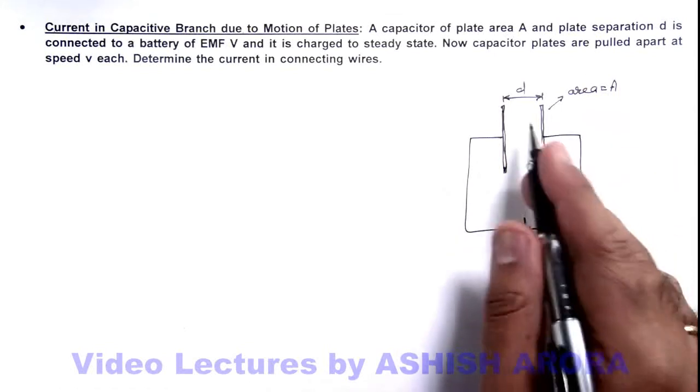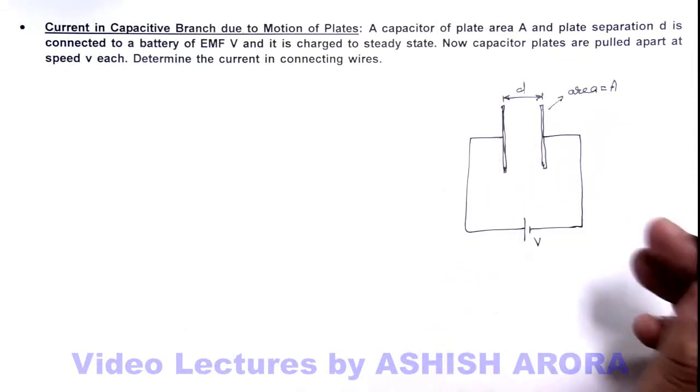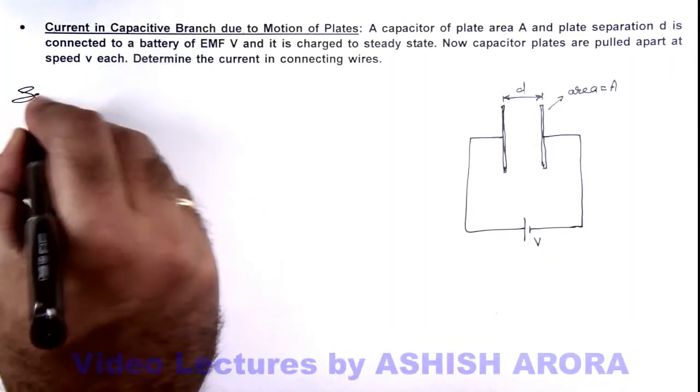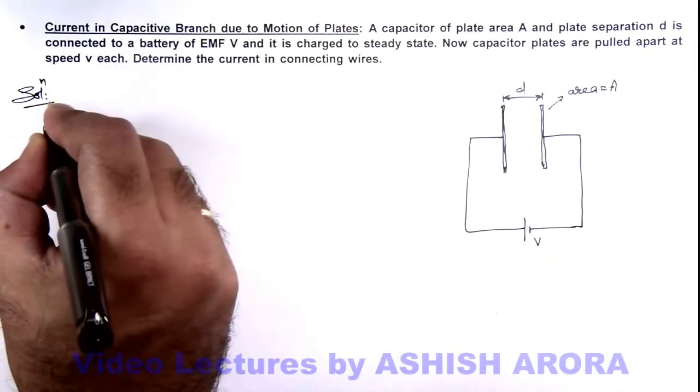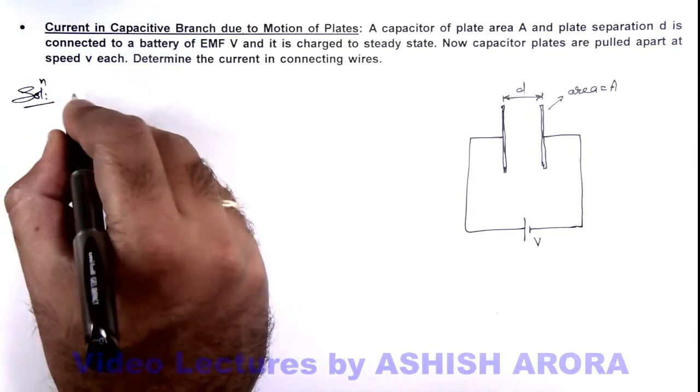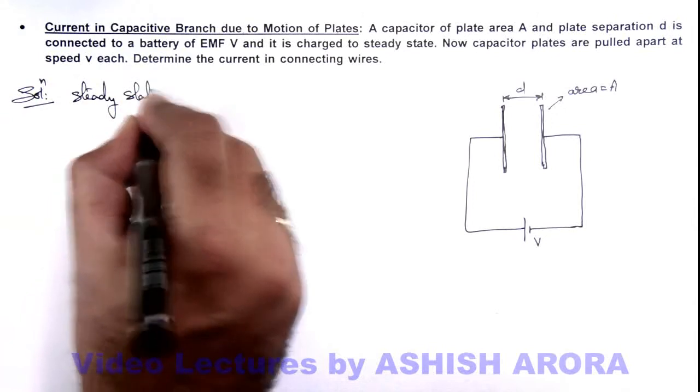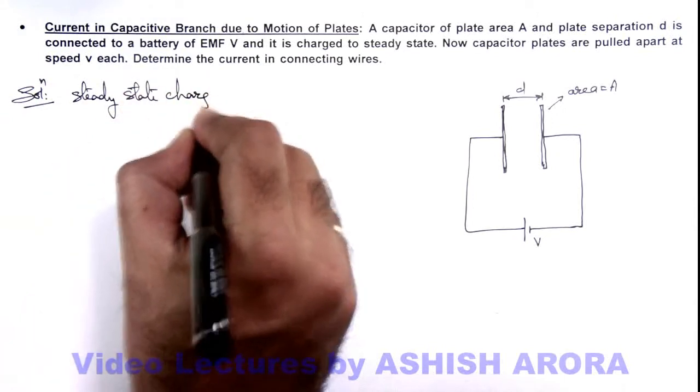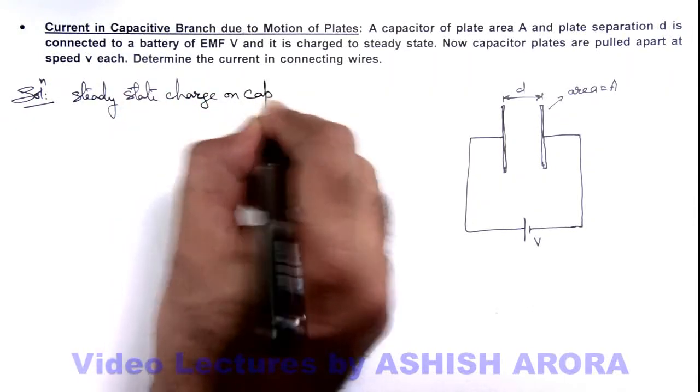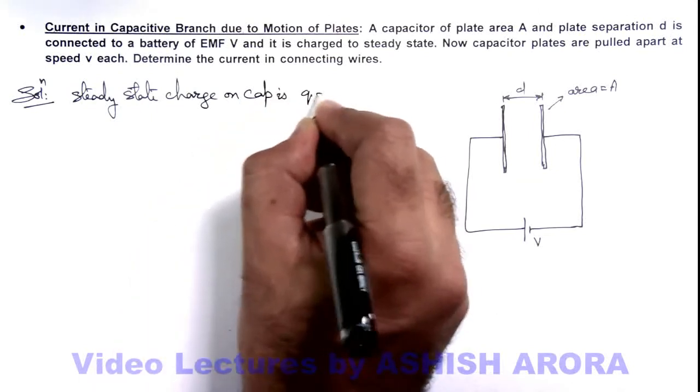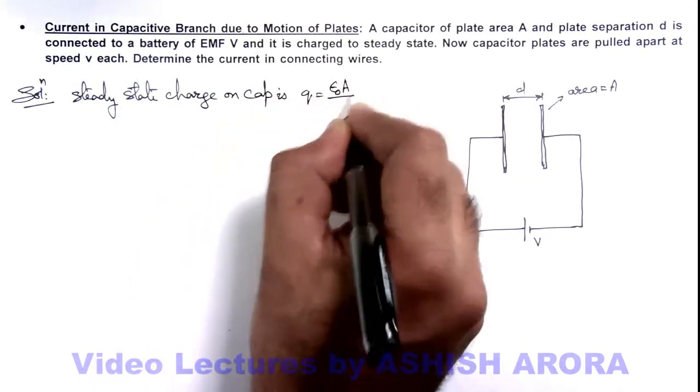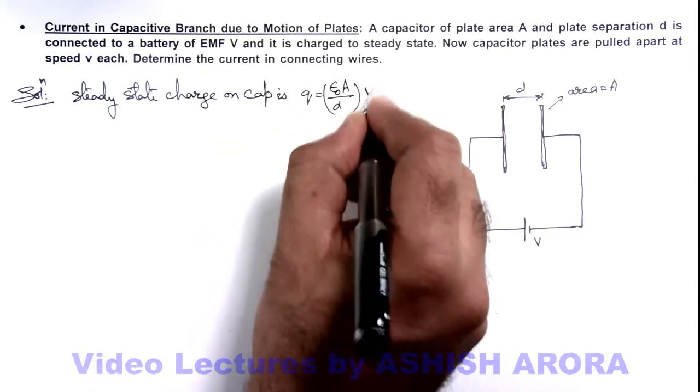If it is charged to steady state, the charge on it will be CV. Here we can write, in this situation, the steady state charge on capacitor is - this charge can be written as ε₀A/d, which is the capacitance, multiplied by V.